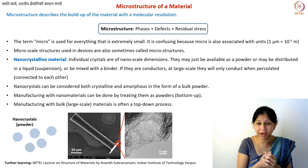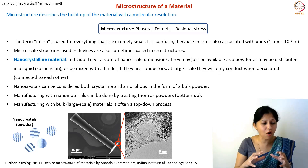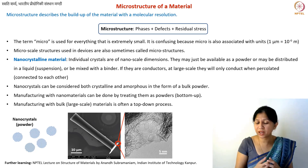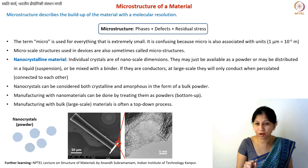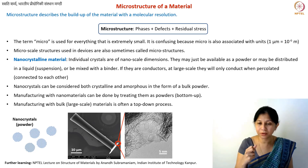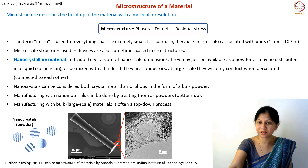You can do manufacturing using binders — this is a bottom-up manufacturing approach, also called an additive technique. Top-down approaches mean you take a big block and remove the undesired material. Large-scale manufacturing processes are often top-down, but there are also large-scale bottom-up examples, like construction where you stack bricks. Typically for industrial tool manufacturing at large scale, top-down approaches are used. From the next lecture onwards, we will talk specifically about carbon materials.